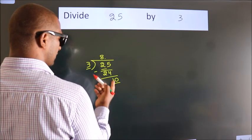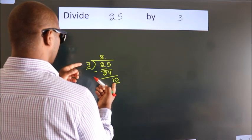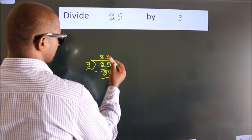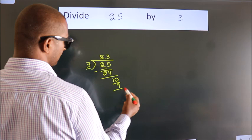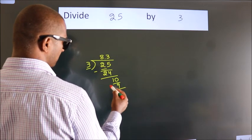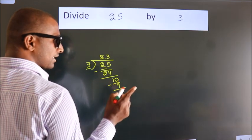So, 10. A number close to 10 in 3 table is 3 3s 9. Now we subtract. We get 1.